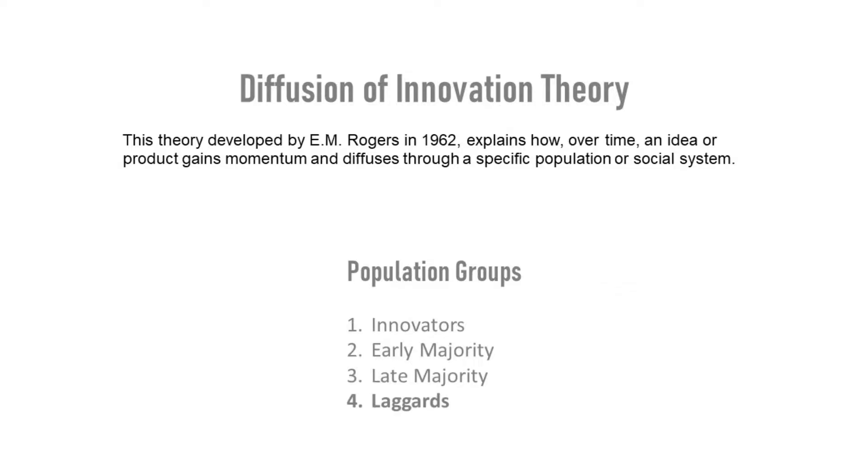Everett Rogers, a professor of communication studies, popularized a theory in his book Diffusion of Innovation, and he proposes five main elements that influence the spread of a new idea: the innovation itself, adopters, communication, time, and a social system.